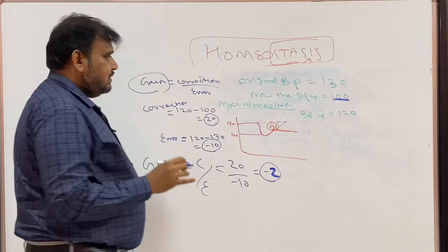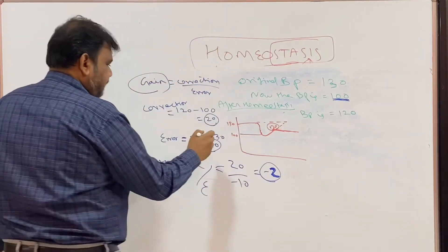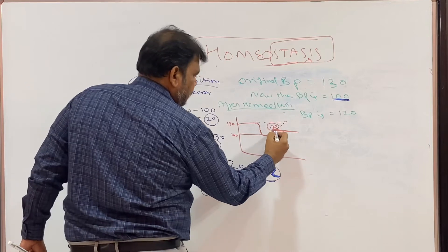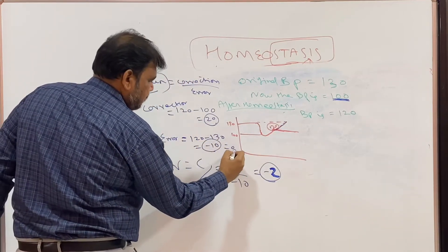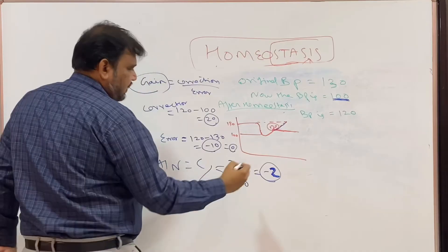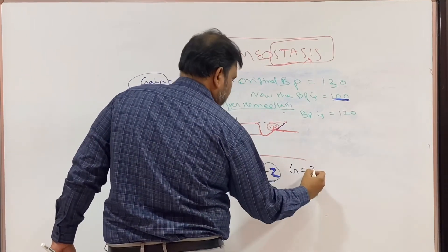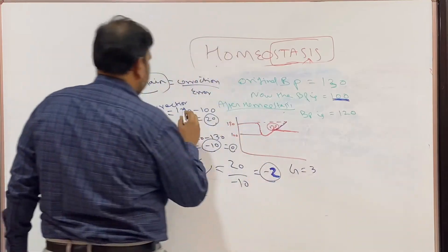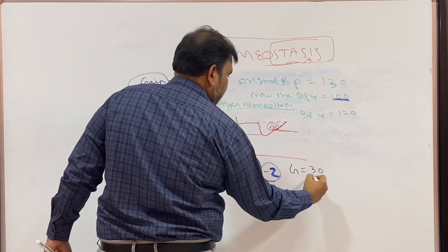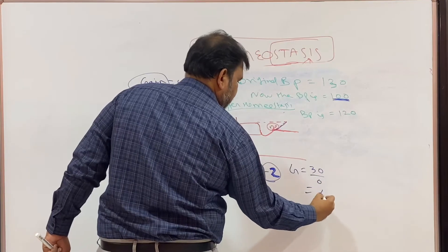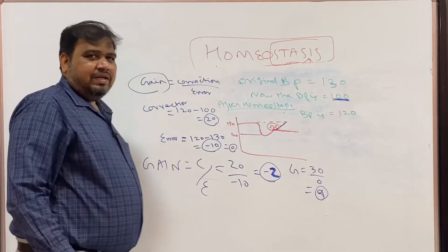For example, imagine homeostasis is working perfectly. The BP may come all the way back to 130. Then the error would be 130 minus 130, which equals 0. The correction would be 130 minus 100, which is 30. So gain would be 30 divided by 0, which is infinity. So when homeostasis is perfect, the gain approaches infinity — though a denominator of exactly 0 is very rare in practice.